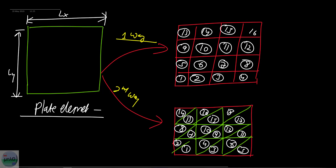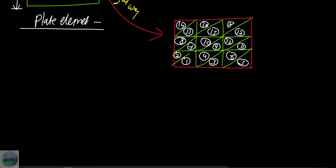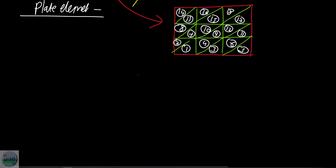Now the question is how to assemble this kind of configuration, because in 1D cases it is pretty simple by comparison. There is a specific approach for this class of problem. I introduce a particular concept called the element connectivity matrix.